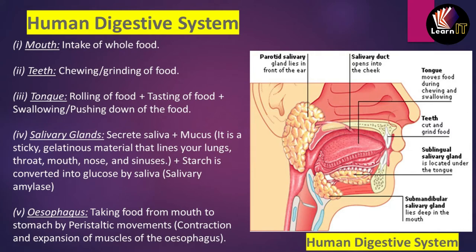The tongue rolls the food from left to right so it can be properly masticated and mixed. It also helps in tasting food and in pushing food from the mouth into the esophagus. There is also the salivary gland, which is not part of the alimentary canal but is an accessory gland. It secretes saliva and mucus — a sticky and gelatinous material — which helps in the easy swallowing of food.